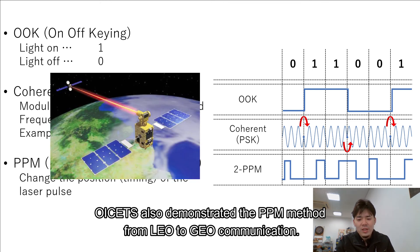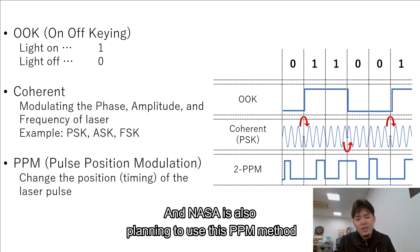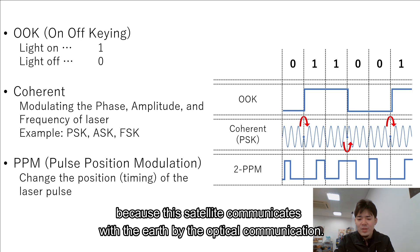OISETS also demonstrated the PPM method from LEO to GEO communication. And NASA is also planning to use this PPM method for Mars satellite, because this satellite communicates with the Earth by optical communication.